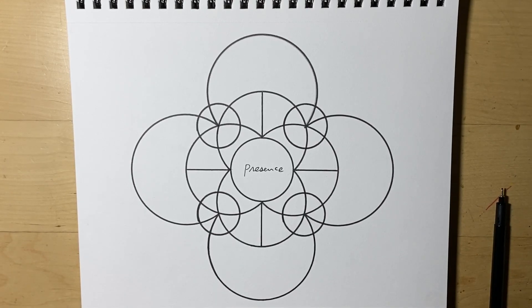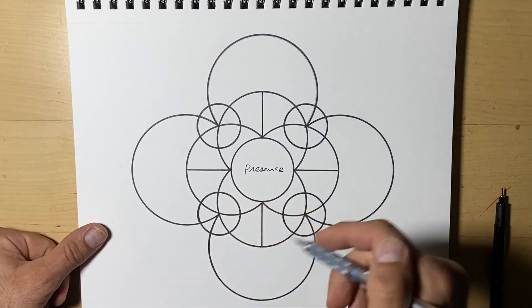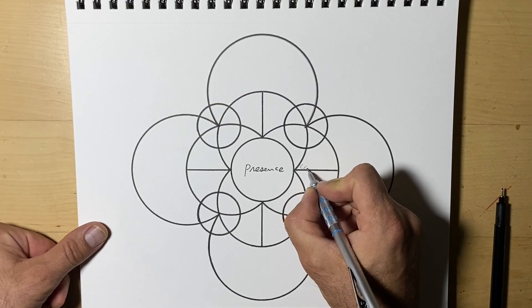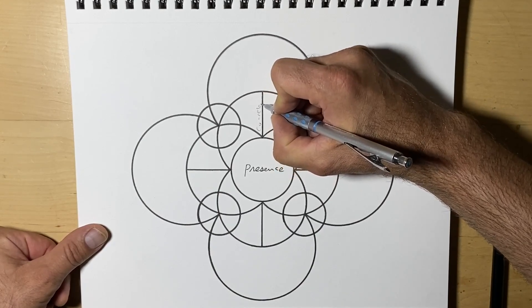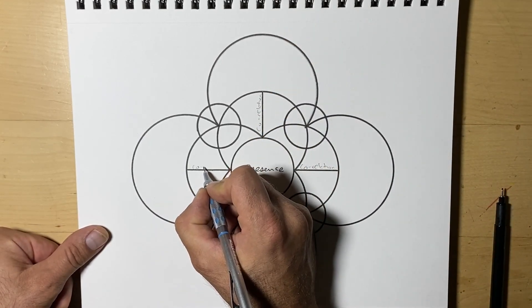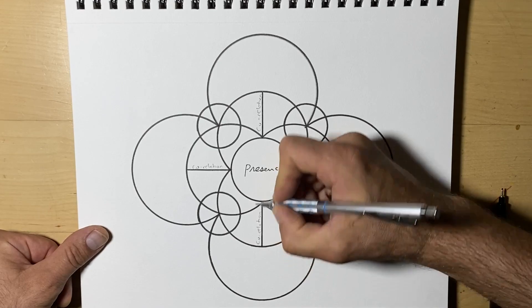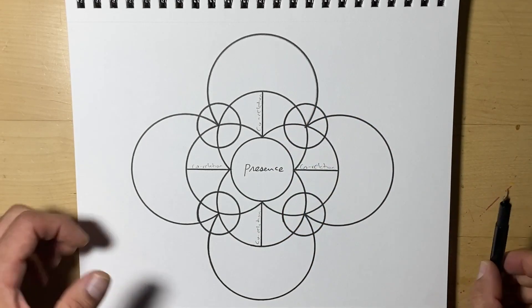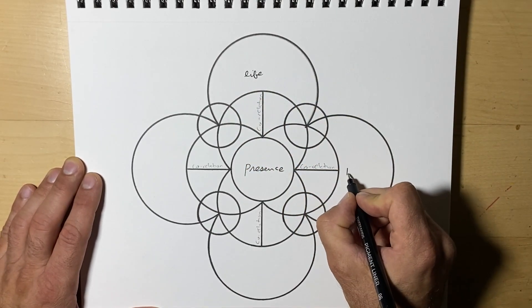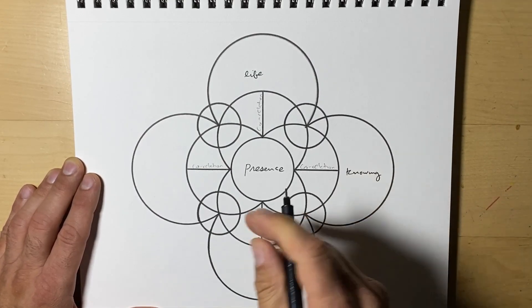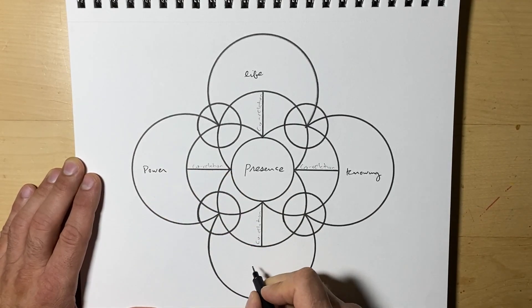Here is what the finished product looks like. In the center, he had the word presence. On each of these lines, he had co-relation. Then on the outer boxes, up here you have life. Here you have knowing, on the left we have power, and on the bottom we have wanting.